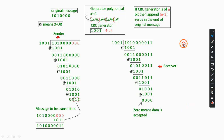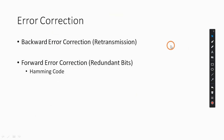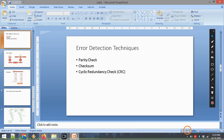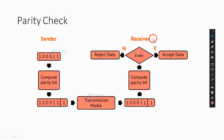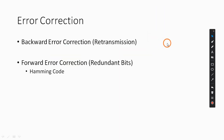That covers the three error detection techniques: parity check, checksum, and CRC. Now we move on to error correction. Once the receiver detects errors in the data, it will try to correct them.